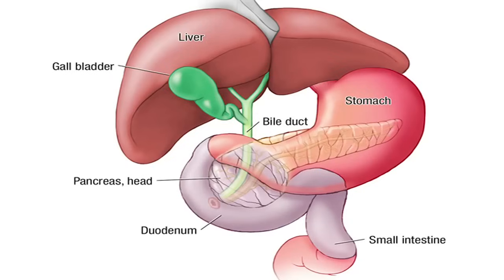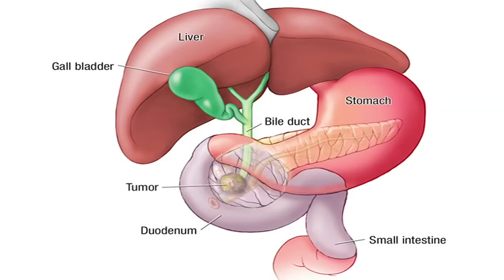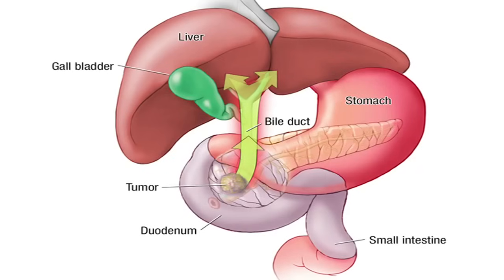The bile duct is really a pipe system that brings the bile produced in the liver into the intestine. Commonly, a tumor located on the head of the pancreas will obstruct this pipe system or bile duct. When an obstruction of the bile duct occurs, the bile gets backed up into the liver and reabsorbed into the blood, and therefore you develop jaundice — the yellow color of the skin.